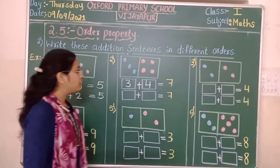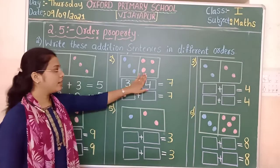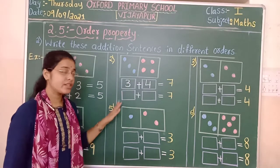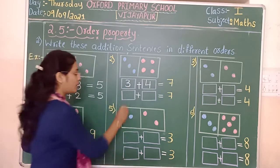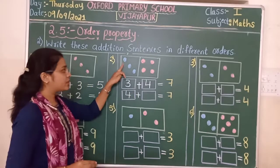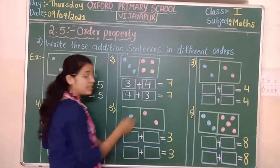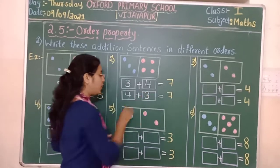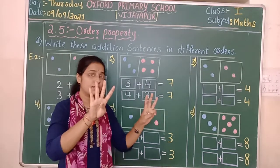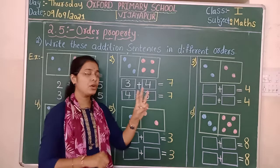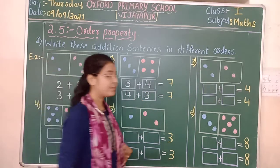Next, we have to change. We consider the second addend as the first. The second box has four dots — take four as the first addend. The first box has three dots — take that as the second addend. Four plus three — counting gives us one, two, three, four, five, six, seven. Seven is the sum. The sum is the same.